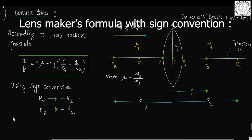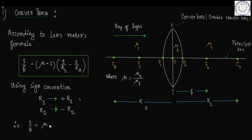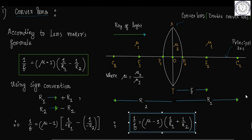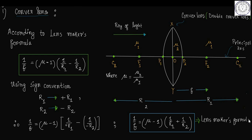Therefore, the Lensmaker's formula becomes 1 by f equals mu minus 1, times 1 by plus R1 minus 1 by minus R2. Since R2 is negative, this gives 1 by f equals mu minus 1 into 1 by R1 plus 1 by R2. This is the Lensmaker's formula with sign convention for a convex lens.